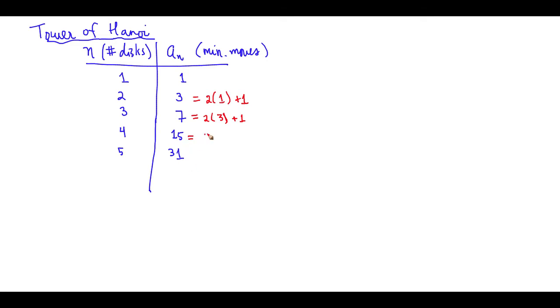Fifteen is really two times the previous number of moves, two times seven plus one. And of course, thirty-one is two times fifteen plus one.